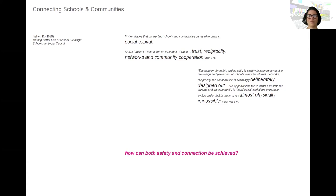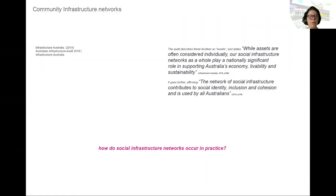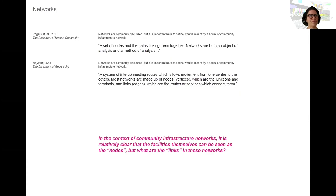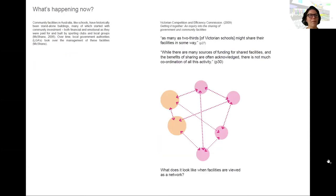Zooming in on social infrastructure and infrastructure networks — interestingly, Infrastructure Australia included social infrastructure for the first time in their infrastructure audit last year. Within the audit there are a lot of references to social infrastructure networks, but how do social infrastructure networks occur in practice? There's no data looking at how these networks operate. And what even are networks? Looking at networks in their most basic form as nodes with connections linking them together — if you're thinking about community infrastructure networks, the facilities can obviously become the nodes. But what are the links in these networks? This is one of the main research questions I will be trying to map through this PhD process.